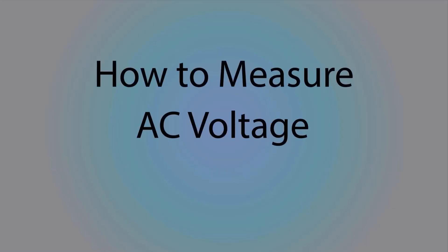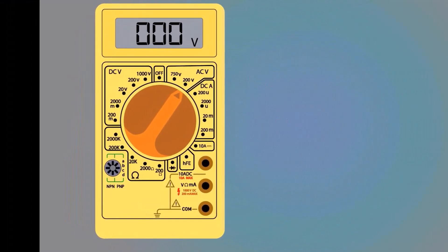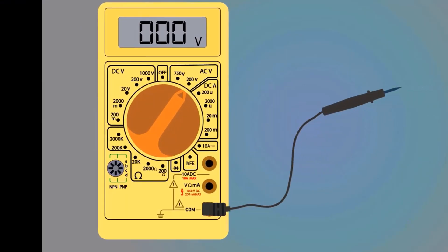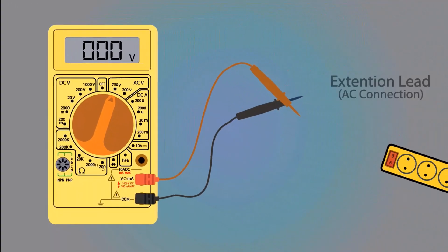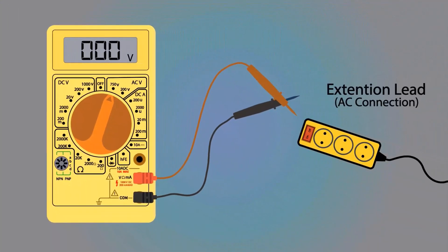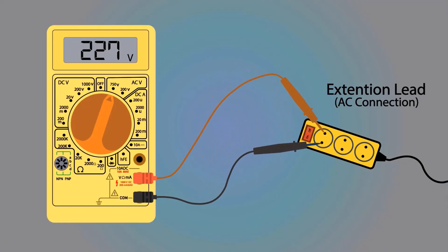How to measure AC voltage with the help of a multimeter. To measure AC voltage, connect the black probe here and the red probe here. The blinking line shows the AC voltage section, and the arrow shows the voltage range we can measure. Select the 750-volt range. Take an AC connection and put the probes into the extension lead connection. The multimeter is showing 227 volts. This is how we can measure AC voltage.